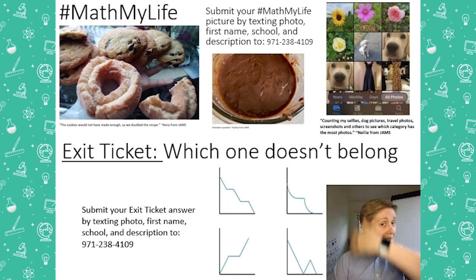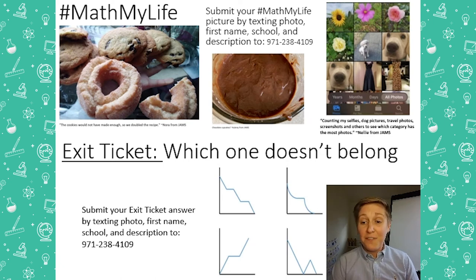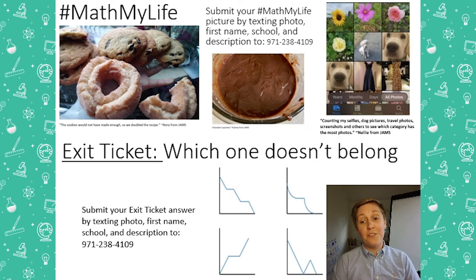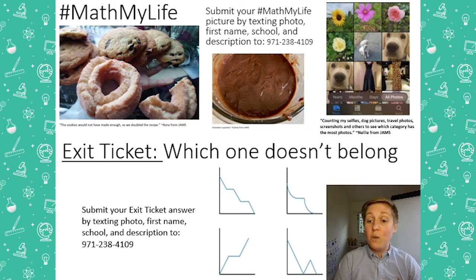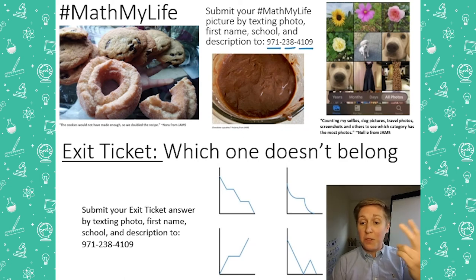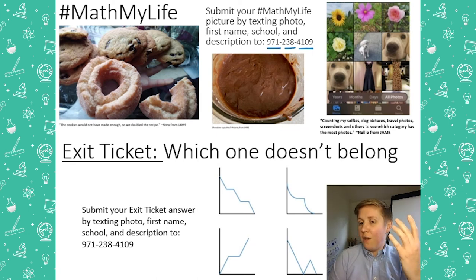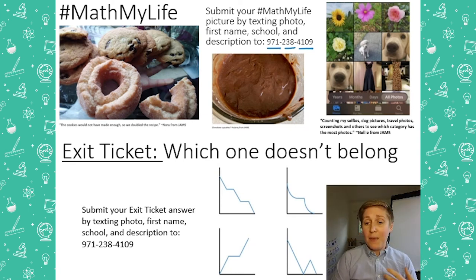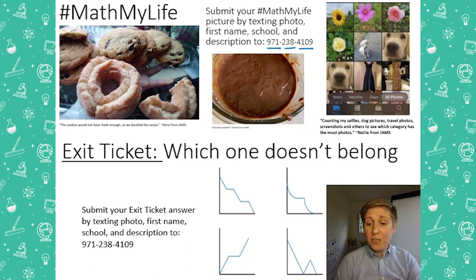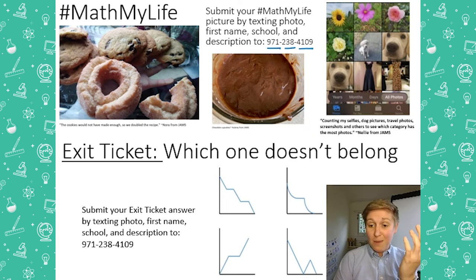To wrap all this up, there are two last things. For 'Math My Life,' send in pictures of functions from your life: sketch a quick graph on paper with time on the x-axis, something on the y-axis, and graph a function you noticed. Text it to 971-238-4109 with your name, school, and a description — for example, someone running, going away and toward you, or maybe it's about money. Remember: anything with a relationship between the independent variable and the dependent variable can represent a function. Every input has one unique output.